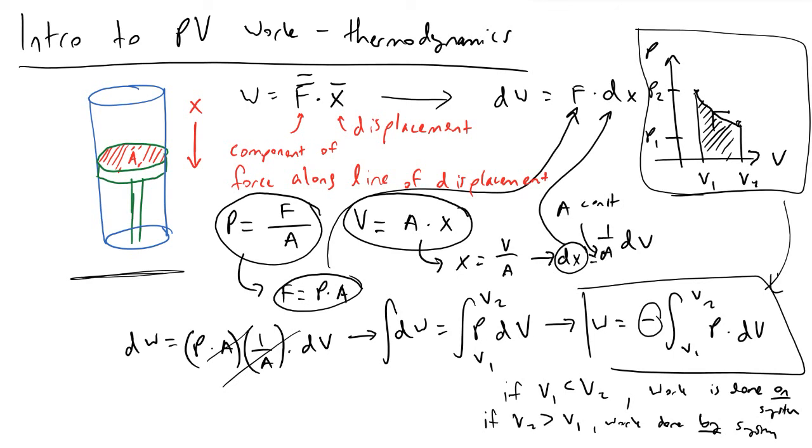In the case when we're doing compression, we are putting work into our system and increasing its internal energy. When our system is expanding, we're doing work by our system, in which case V2 is greater than V1, and the work would be leaving our system with a negative quantity. That's going to wrap things up for this introduction to pressure volume work in thermodynamics. I hope this helps and thanks for watching.